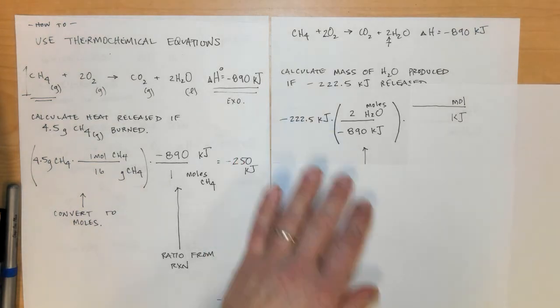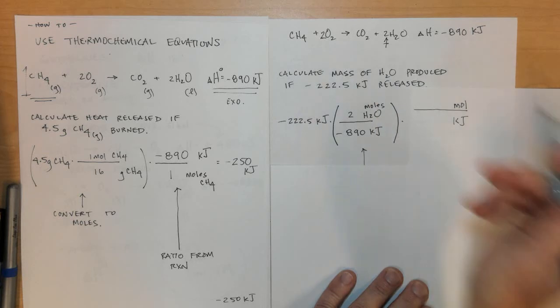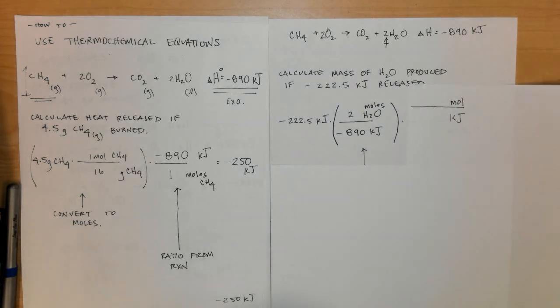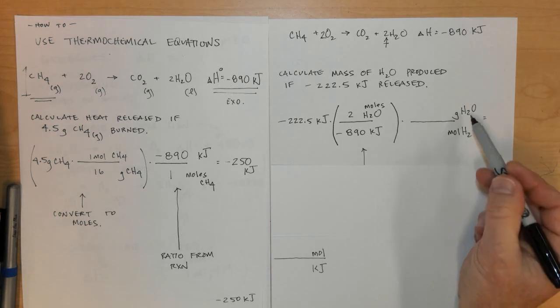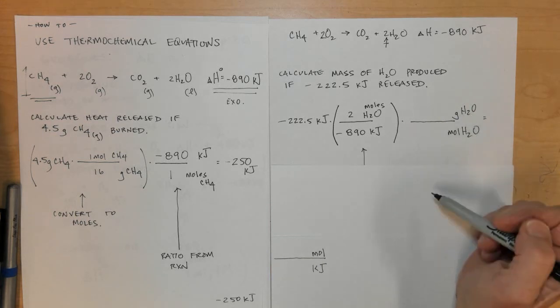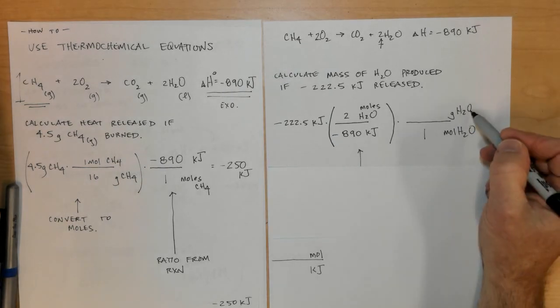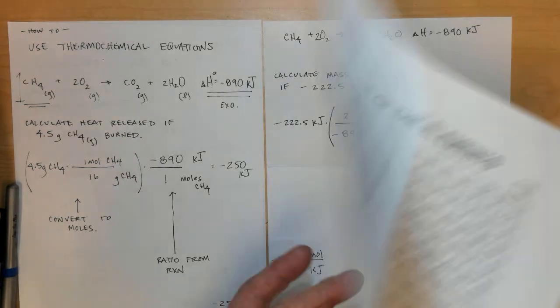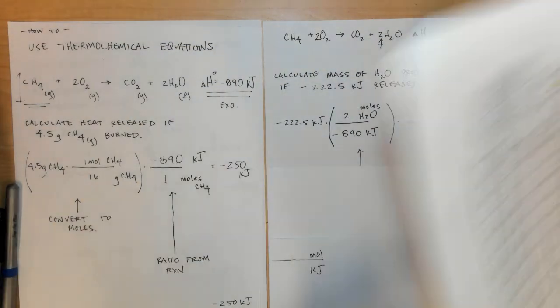Last step after this, I look at the asked for units and they want to know mass. Mass is measured in grams, so I'll convert from moles of H2O to grams of H2O. For every one mole of H2O, if I add up an oxygen and two hydrogens on the periodic table, there's 18 grams.